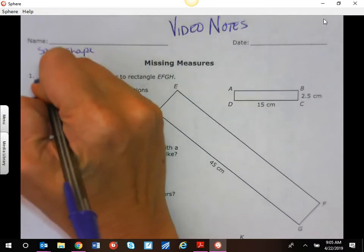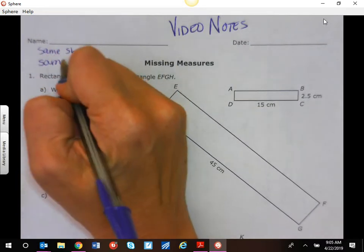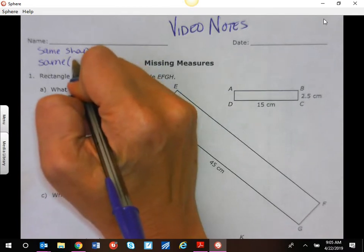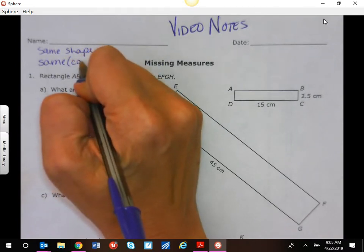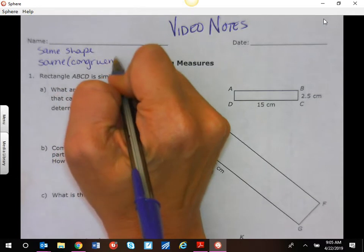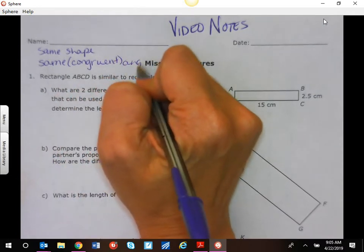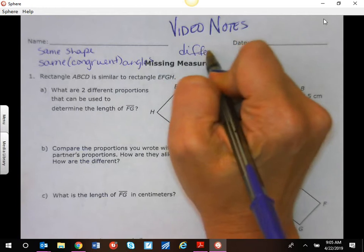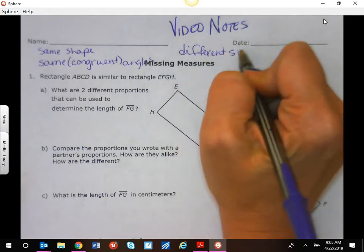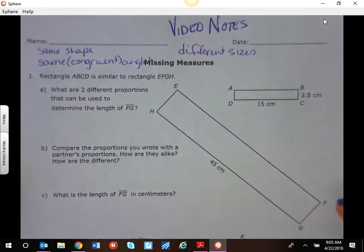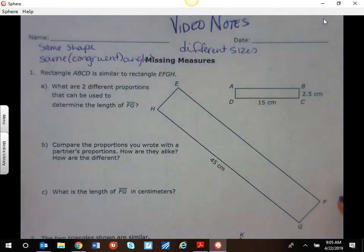They have the same or congruent angles but they are different sizes. So we can make a proportion to find a missing side when shapes are similar.